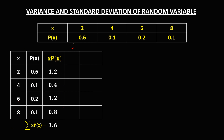For this column, that's x squared. We just need to take the square of x. The square of 2 is 4, the square of 4 is 16, the square of 6 is 36, and the square of 8 is 64.